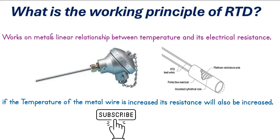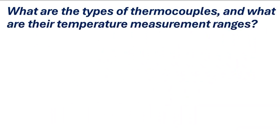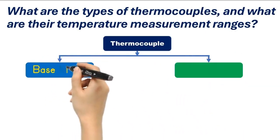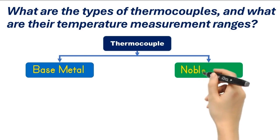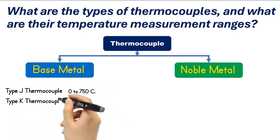What are the types of thermocouples and what are their temperature measurement ranges? Thermocouples can be categorized into two categories: base metal thermocouples and noble metal thermocouples. Let's see the base metal thermocouples. Type J thermocouple: the measurement range of J type thermocouple is 0 to 750 degrees Celsius. Type K thermocouple: the measurement range of K type thermocouple is minus 200 degrees Celsius to plus 1250 degrees Celsius.